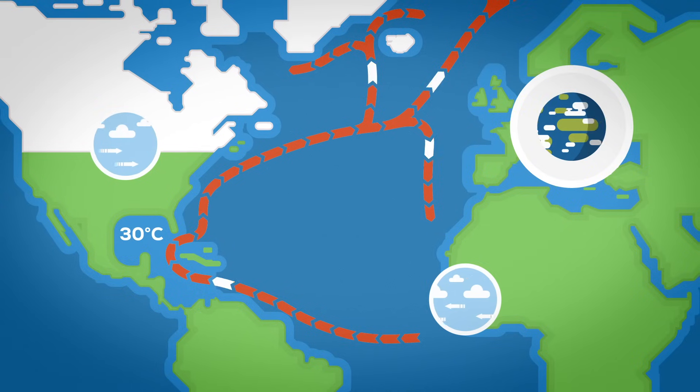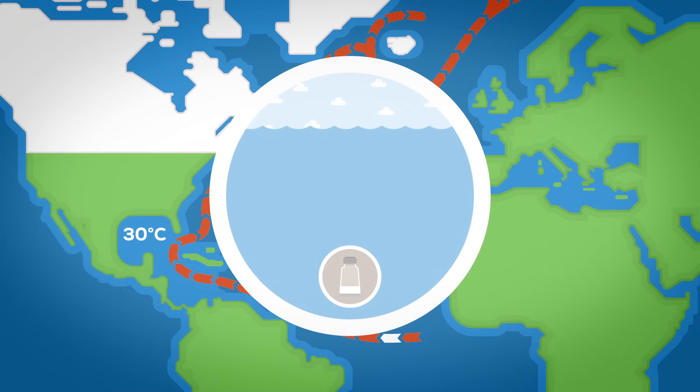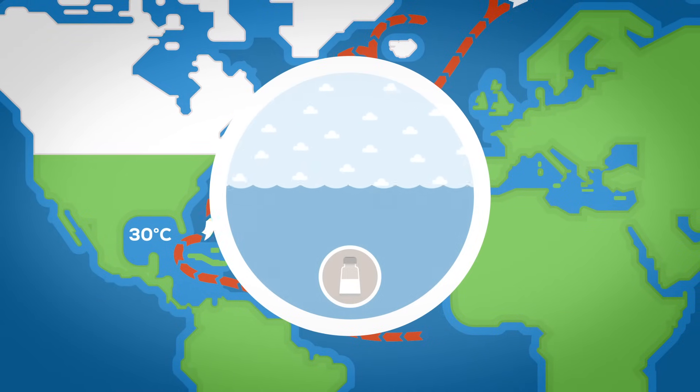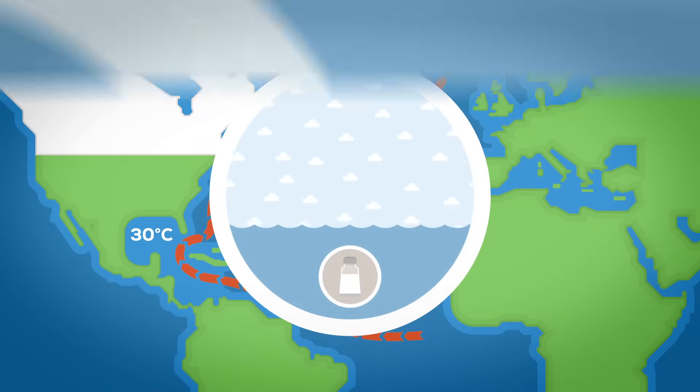The water becomes colder there. Its salt content and density rise on account of evaporation and it drops down between Greenland, Norway and Iceland.